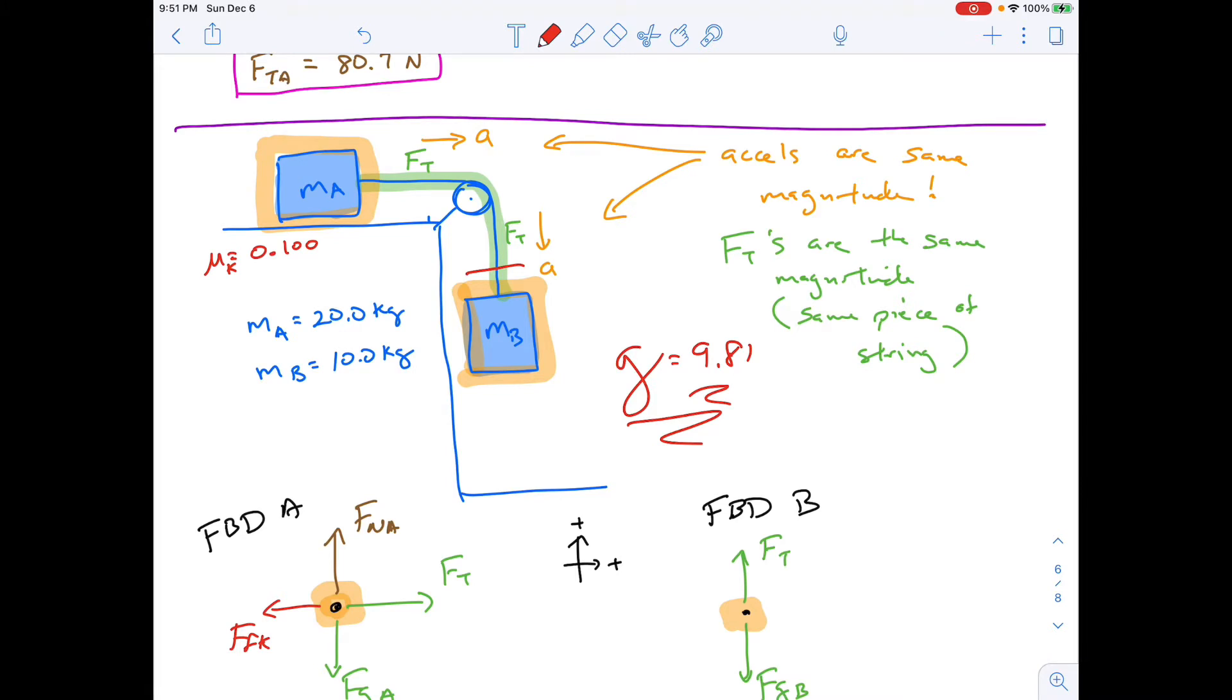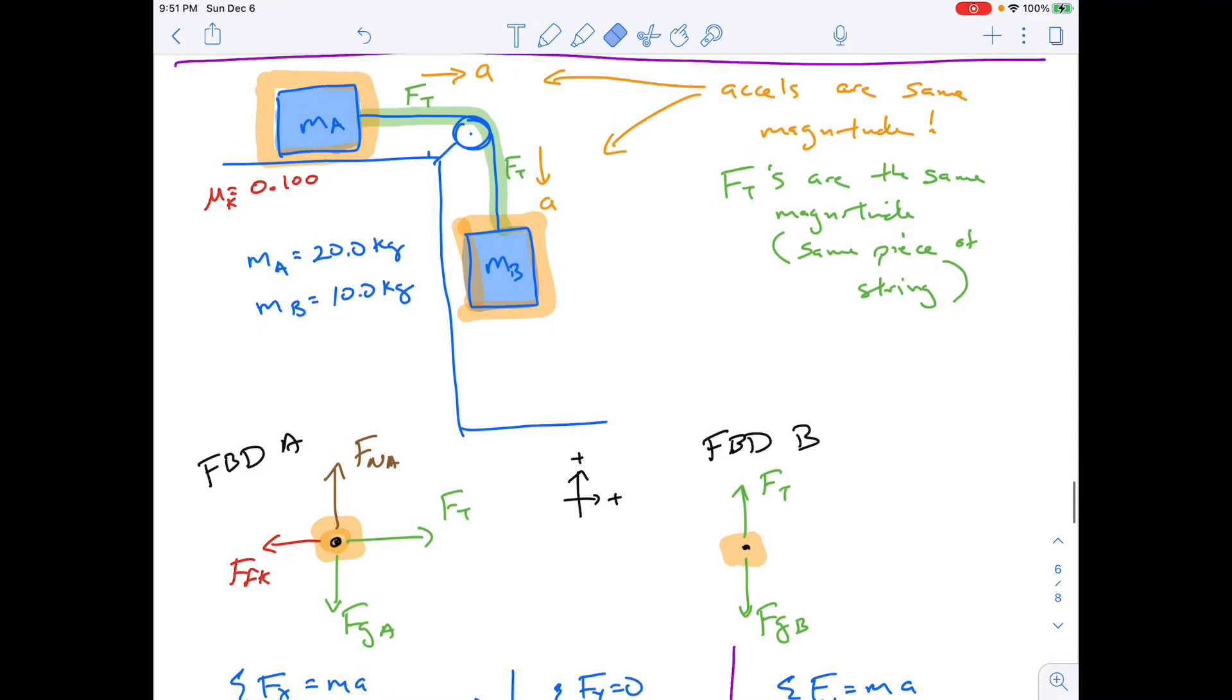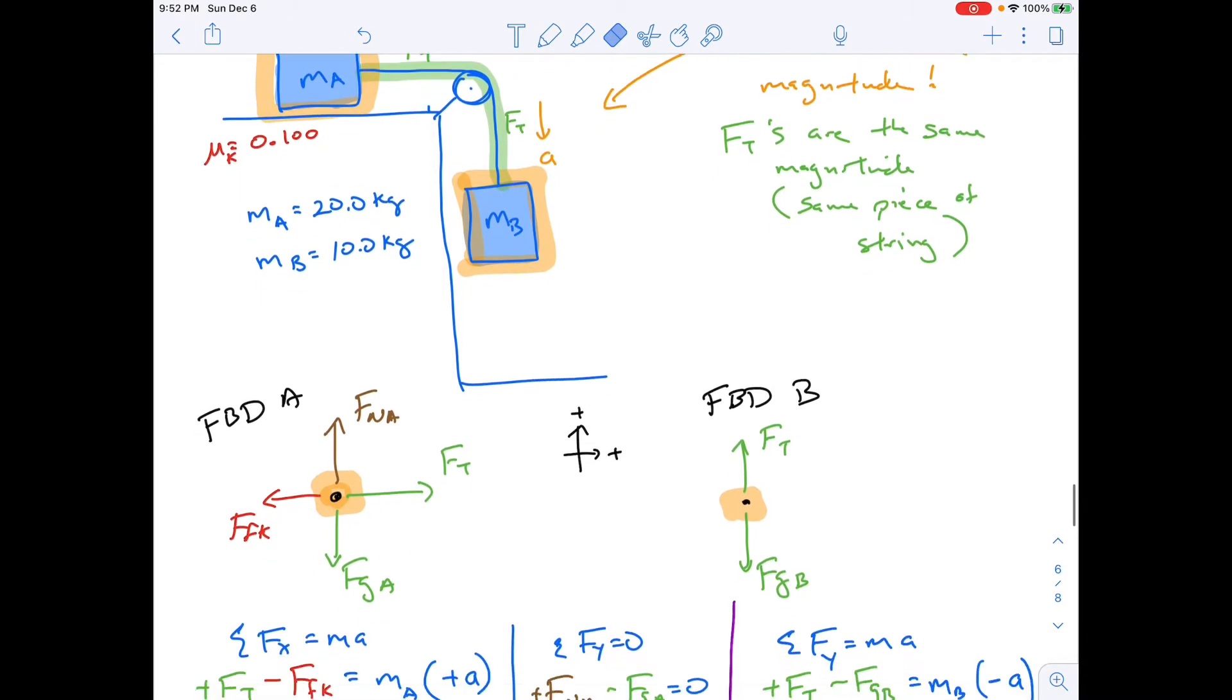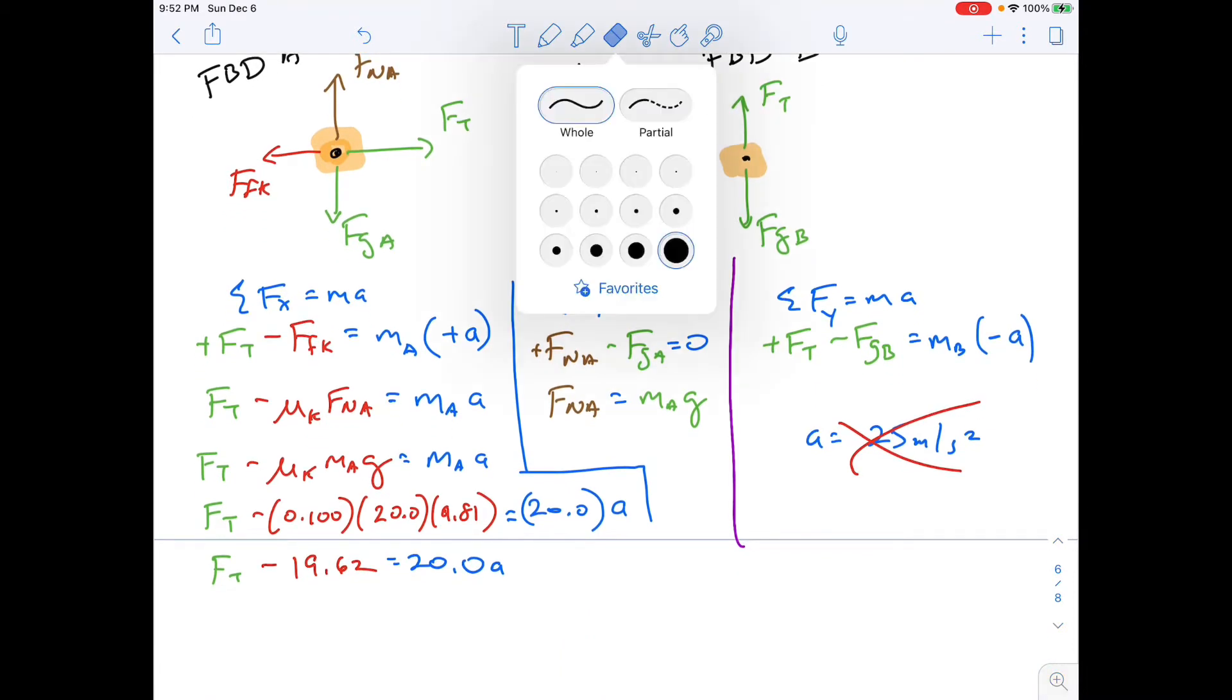This is not possible. So your accelerations in these problems, if you're under the influence of gravity, had better fall between 0 meters per second squared and 9.81 meters per second squared. If you get anything else other than that, I mean, it could be a minus because of direction, but still, if you set up even the negatives and positives correctly, you should only get the magnitude of acceleration. So it should be between 0 and 9.81.